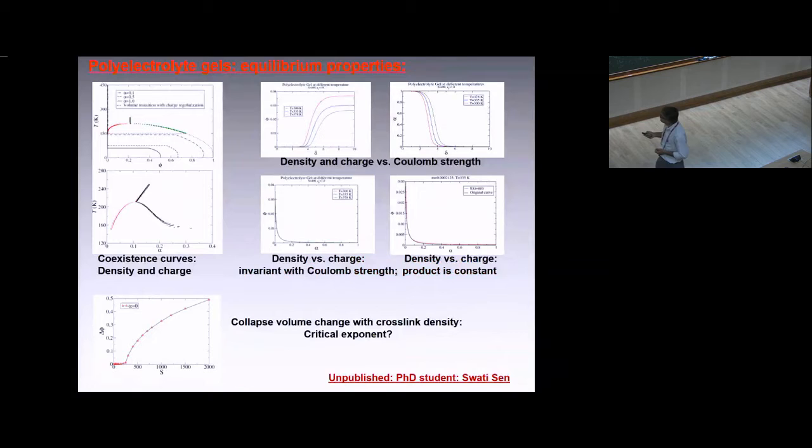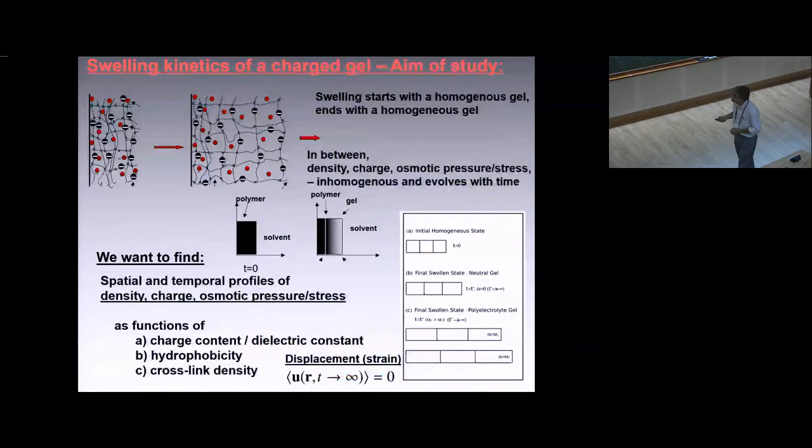This is still unpublished. One can look into the equilibrium properties, this dome for variable charge. Not only the densities will phase separate, also the charge will phase separate - two phases have different charges. You can look into other properties. The density versus charge in the system for different temperatures - these curves collapse on each other. The jump you see depends on crosslink density and vanishes for sufficiently low crosslink density. One can look into the criticality of this region.